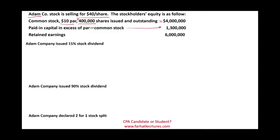Starting with Adam Company issuing a 15% stock dividend — the first thing you want to know is what does 15% mean? It means the stock dividend is considered a small stock dividend, because there is a large stock dividend and a small stock dividend. You want to differentiate between those two, because the way you journalize and how much you reduce retained earnings will depend on whether the dividend is small or large.